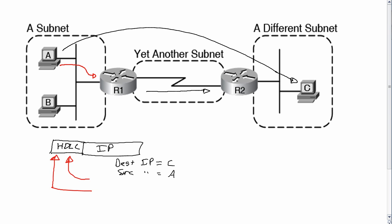When R2 gets the packet, R2 likewise strips off the data link header and trailer and is left with the IP packet in memory. R2 then needs to put a new data link header and trailer around it — in this case Ethernet. R2 has a connected route that includes Host C's IP address, so R2 says it doesn't need to send this to another router — it needs to send it directly to Host C. So the source Ethernet address will be R2's MAC and the destination will be C's MAC.